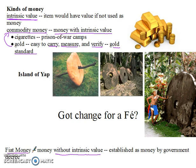So those are our two types of money: commodity money, which has intrinsic value, and fiat money, that does not have intrinsic value. This has been Mr. Hagen on another podcast. Thanks for joining me, and we'll see you on the next podcast.